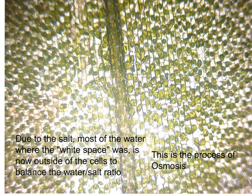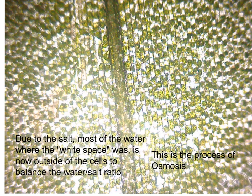Here we have the process of osmosis. Due to the salt, most of the water — where the white space was, as you can see here — has left the cells in order to balance the water-salt ratio. When we have salt water on the outside of the cell, the plant balances how much salt there is on either side of the membrane. The water then moves through the cell membrane to balance this — this is what we call osmosis.